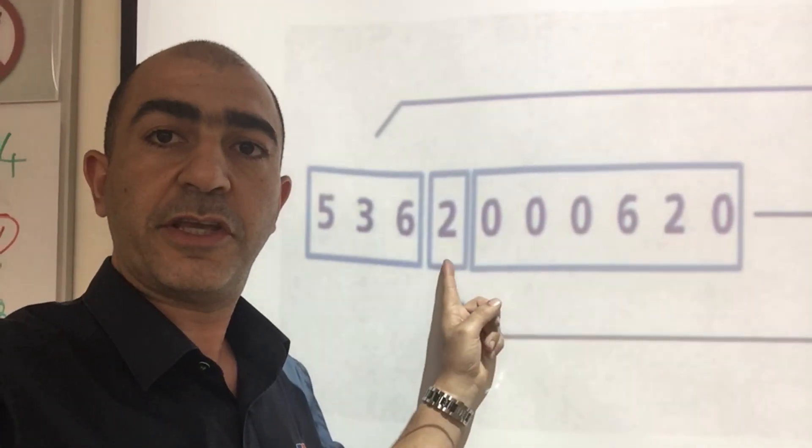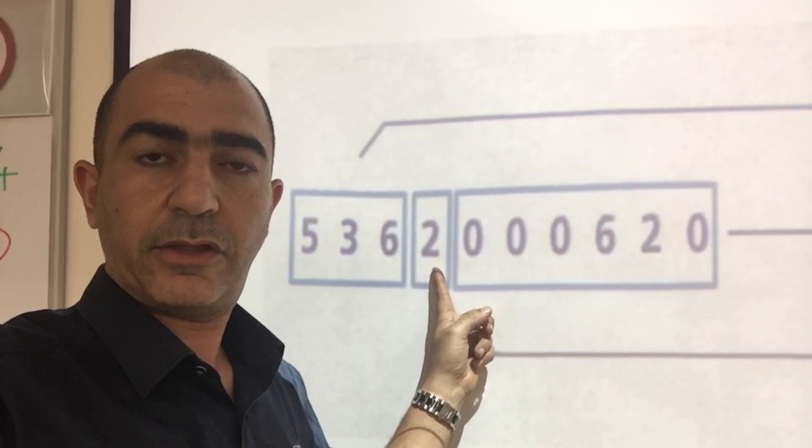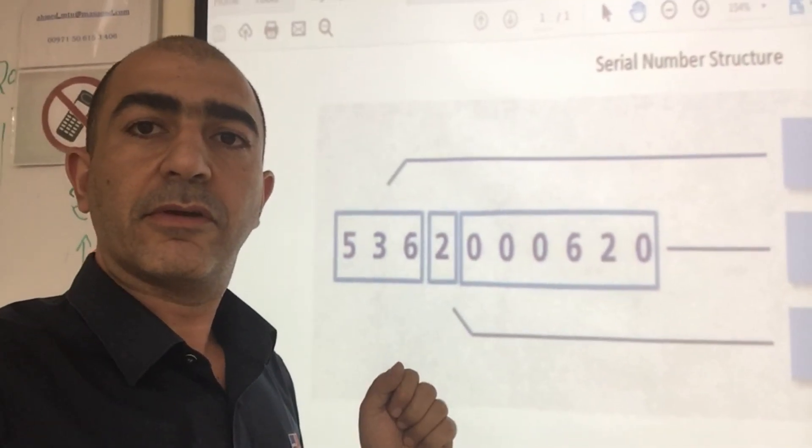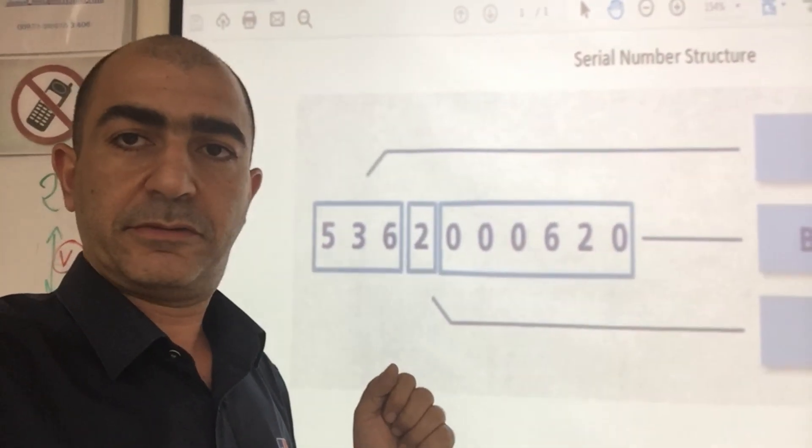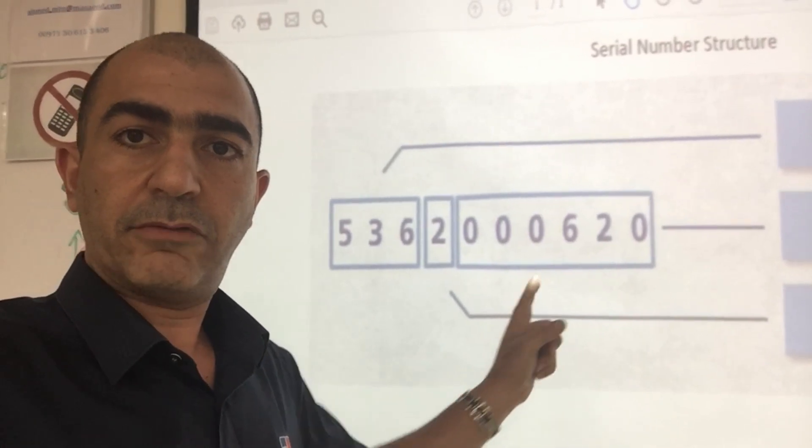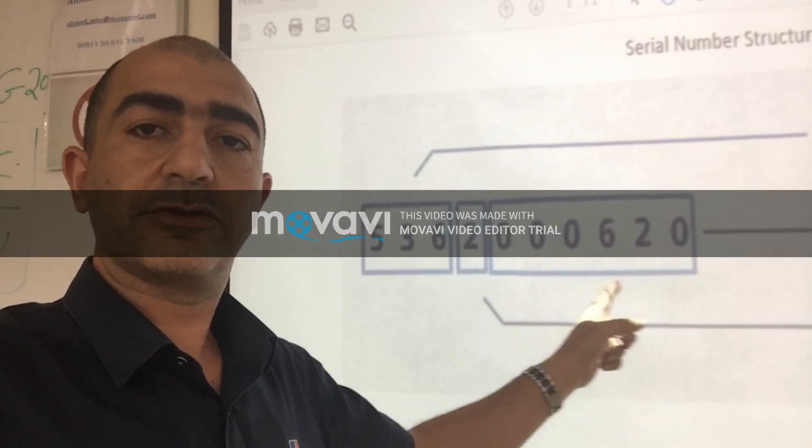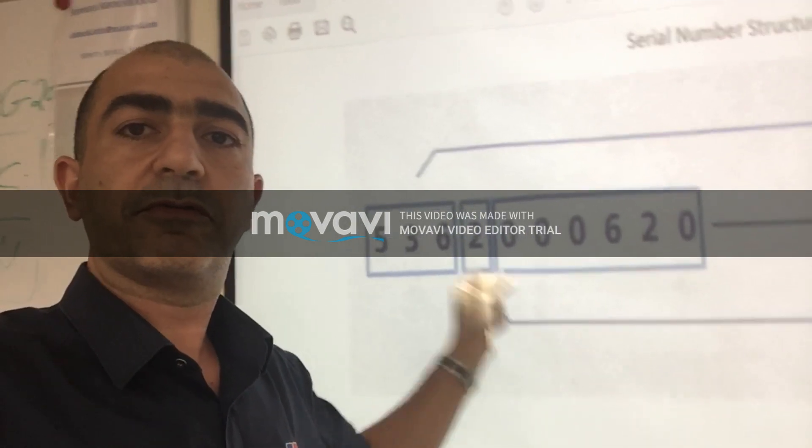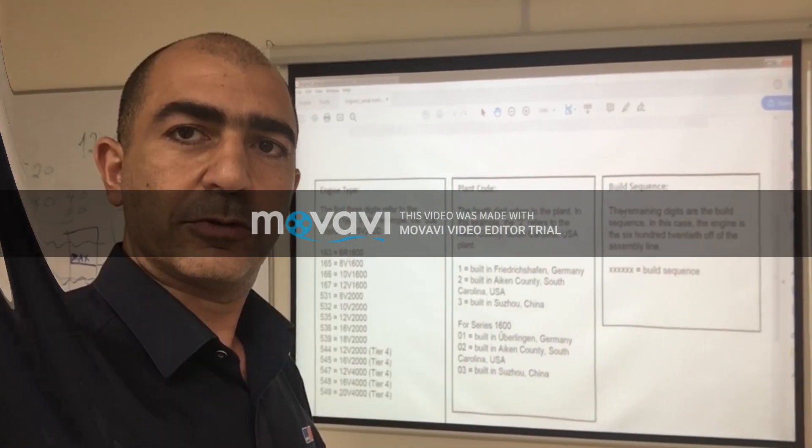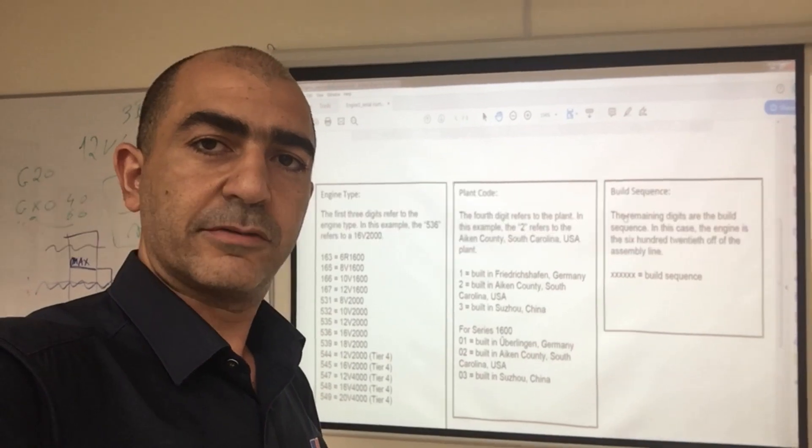...which is here, can be two or one, indicates the plant where the engine was built. And then the remaining six digits at the end are the sequence of building. I hope that you understand this.